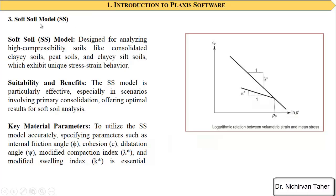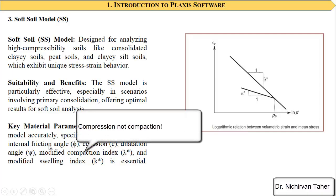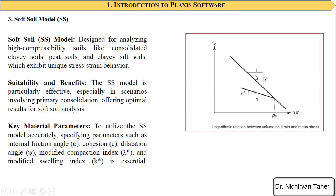Another model is the soft soil model, which is generally used for estimation of consolidation settlement using Plaxis 2D or 3D. The parameters needed for this constitutive model include internal friction angle, cohesion, dilation angle, the modified compression index, and the modified swelling index. As shown in this figure, it represents the relationship between volumetric strain and mean stress in the soil.